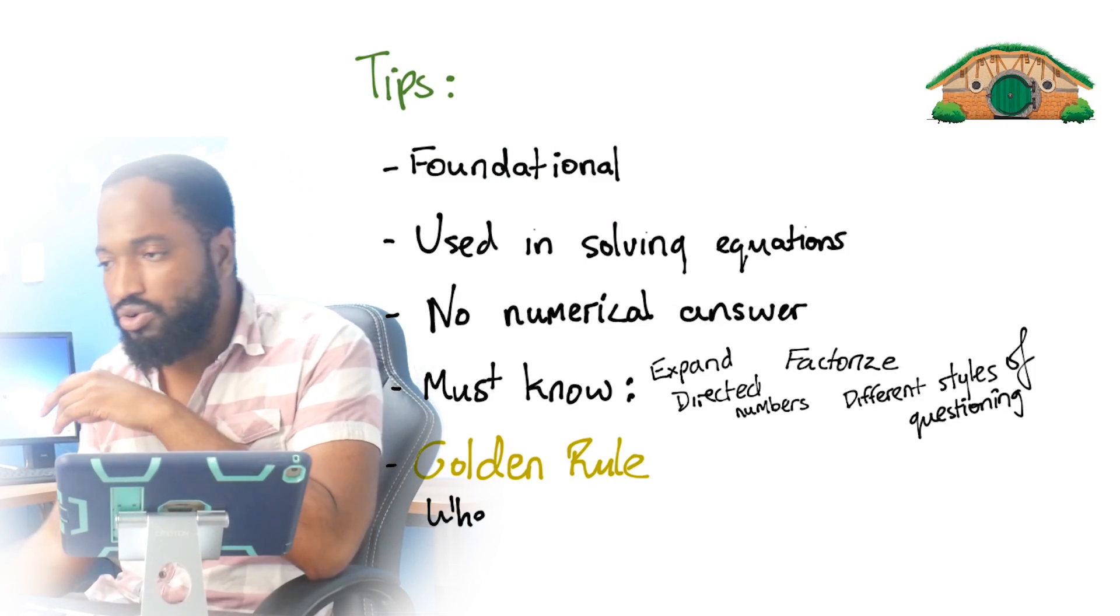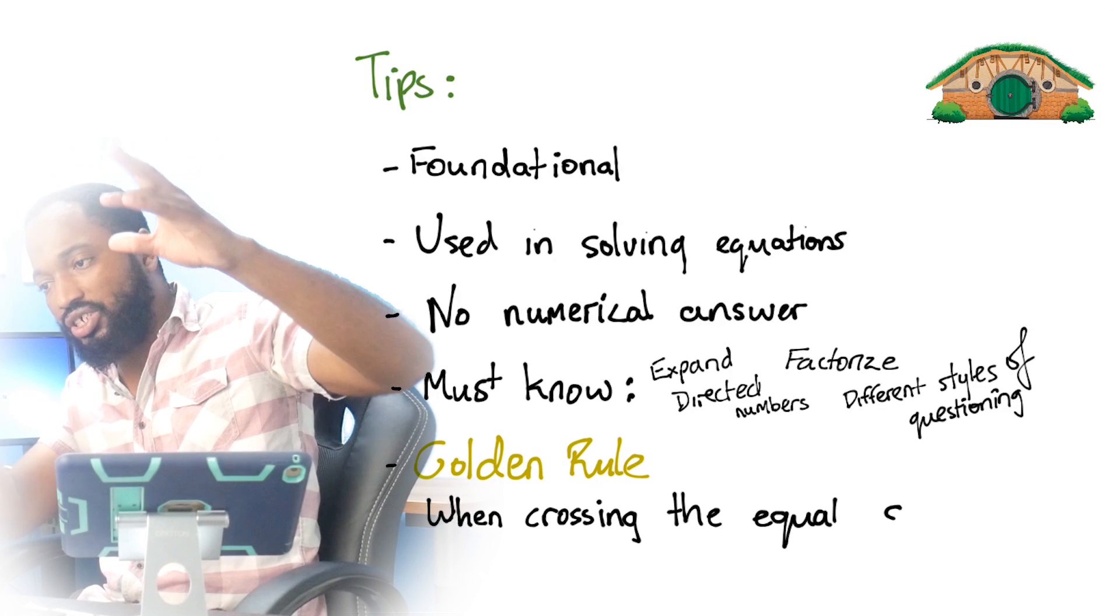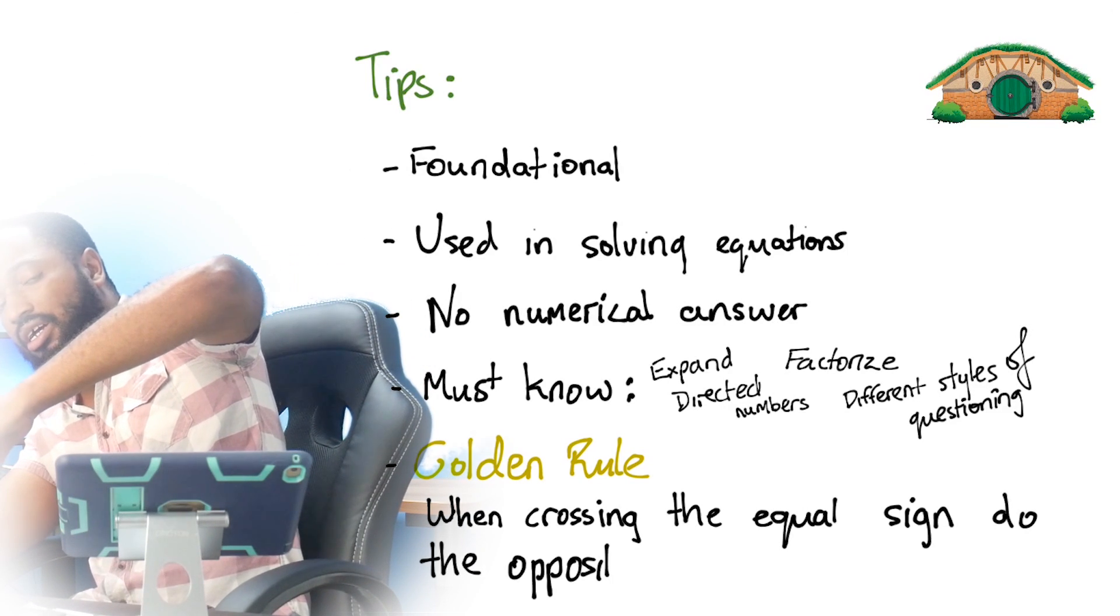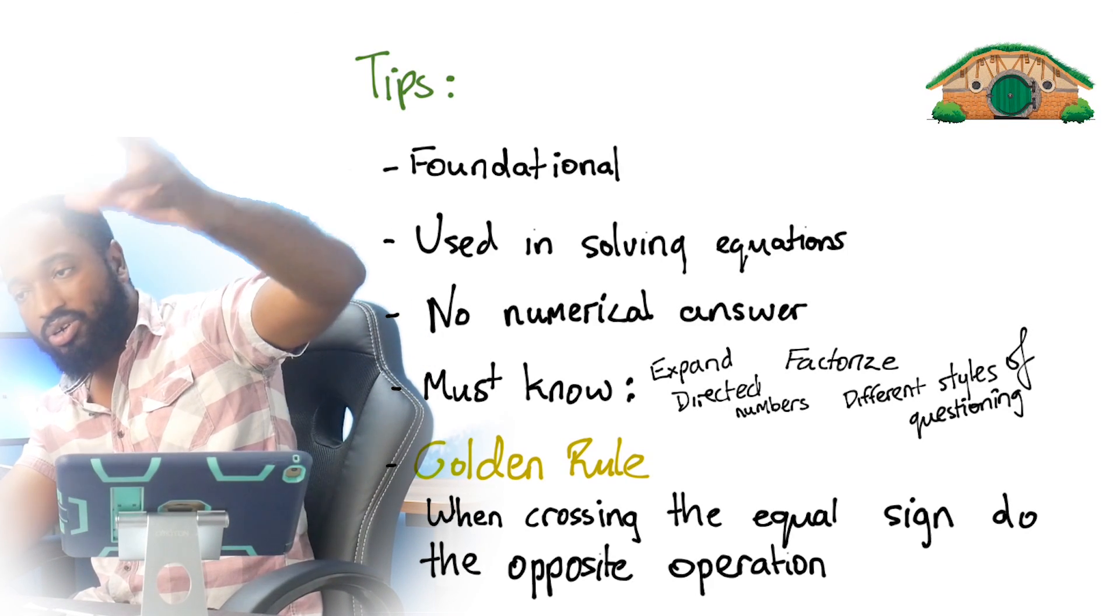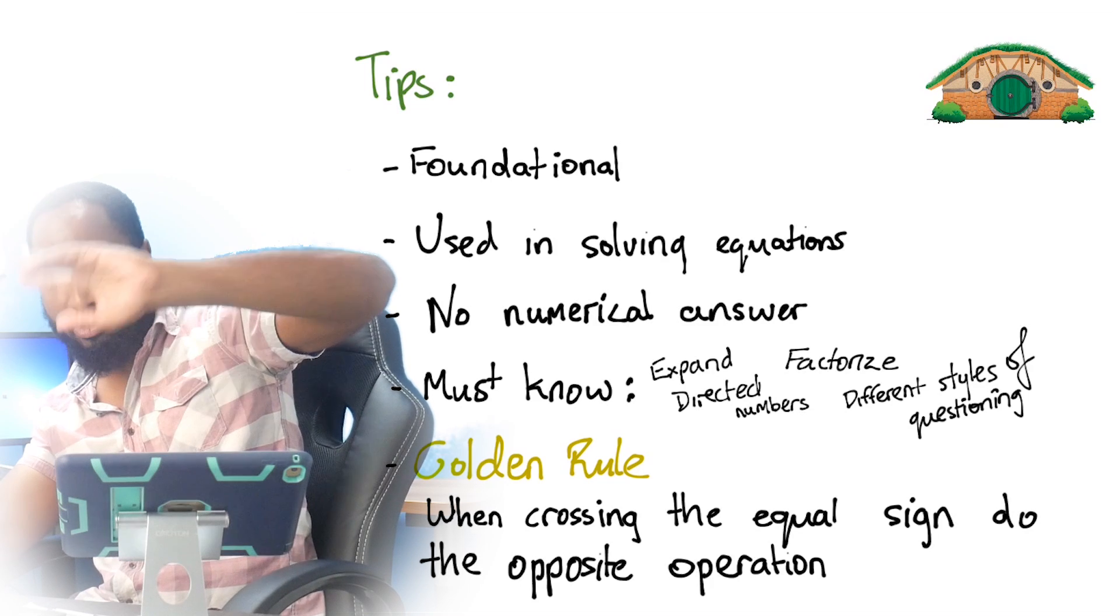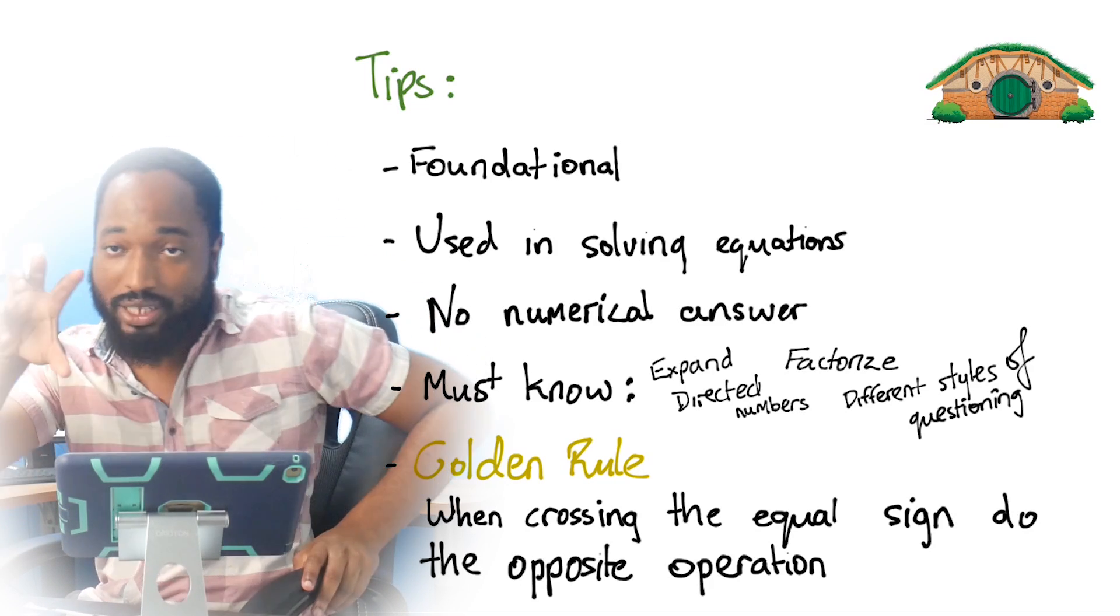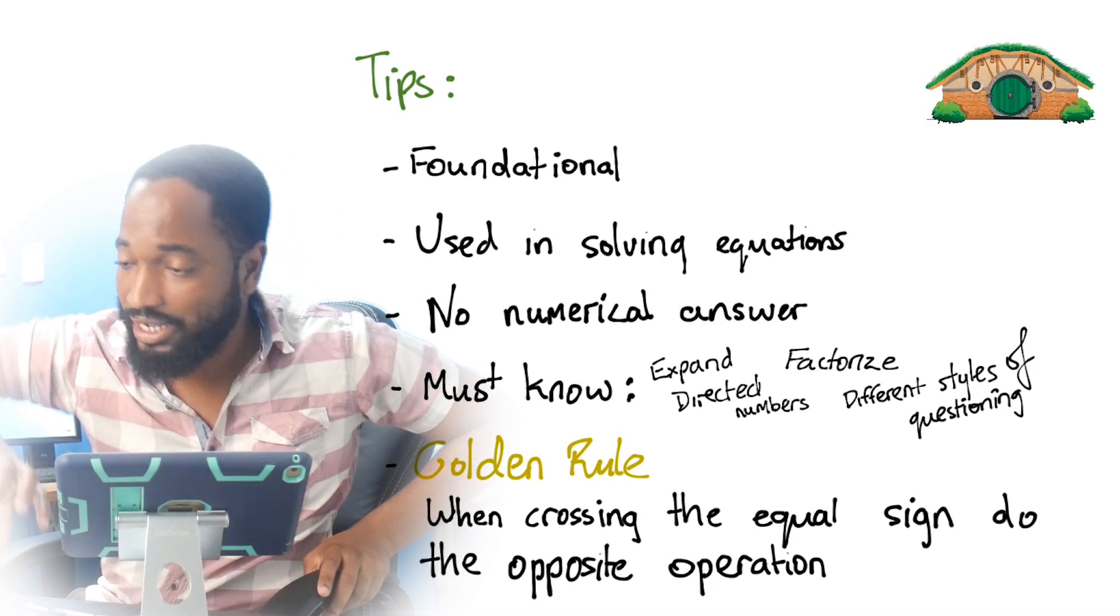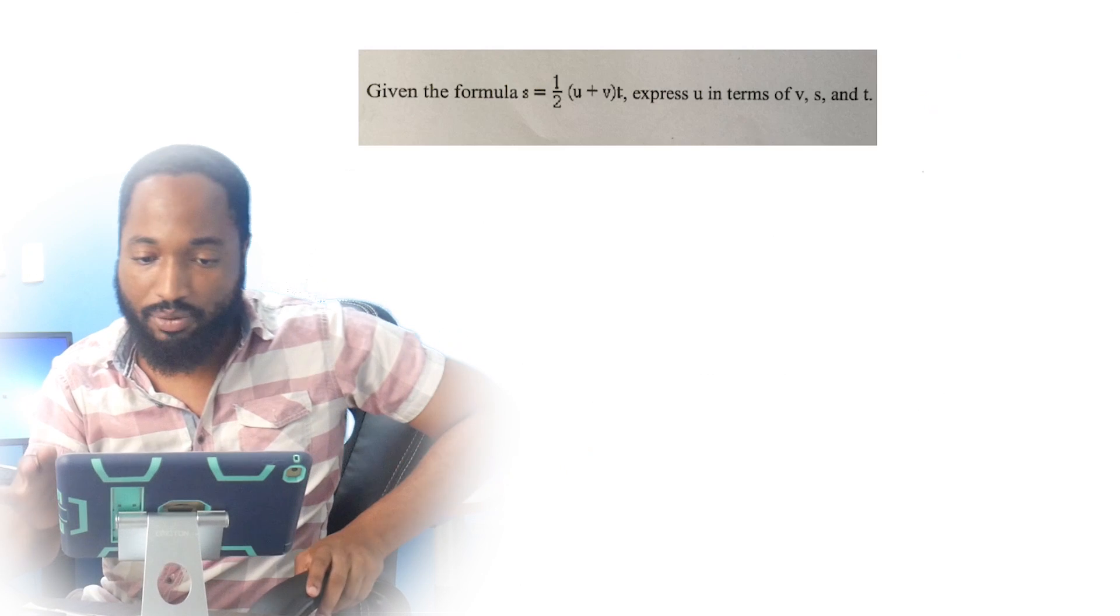Golden rule. Obviously when you're crossing the equal sign, when you're bringing letters, meaning variables, or constants, and you're bringing numbers, numerical values across the equal sign, whatever operation is doing on one side, you switch the operation on the next side. Let me do the question.